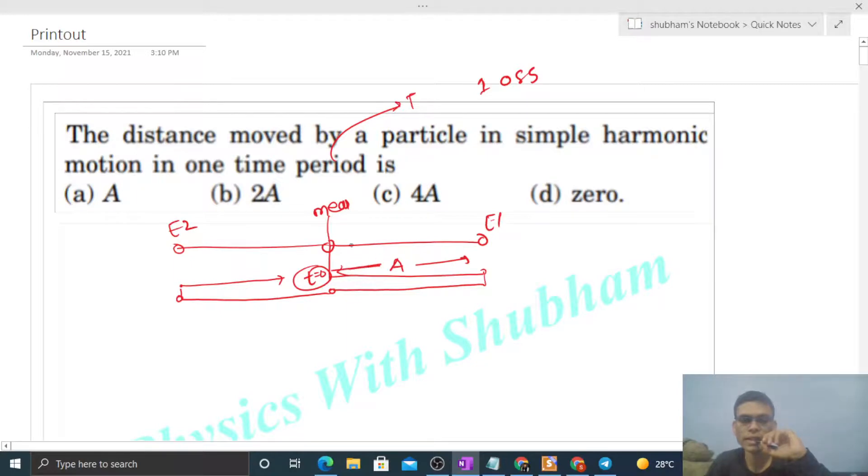Then E1 to mean again distance A, then mean to E2 distance A, and then E2 to mean again distance A. So total how much distance traveled? 4A.